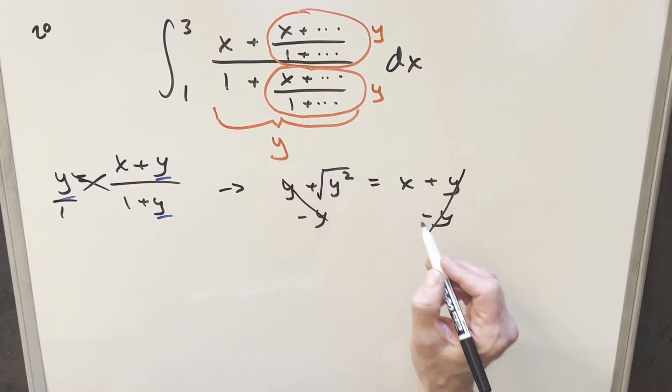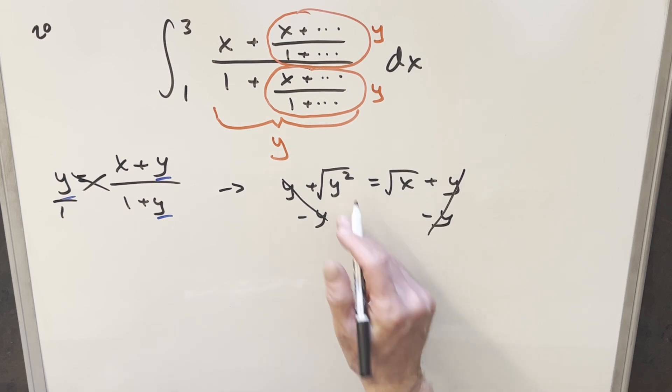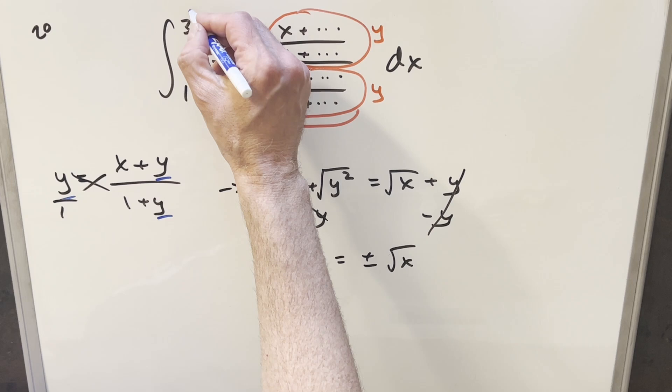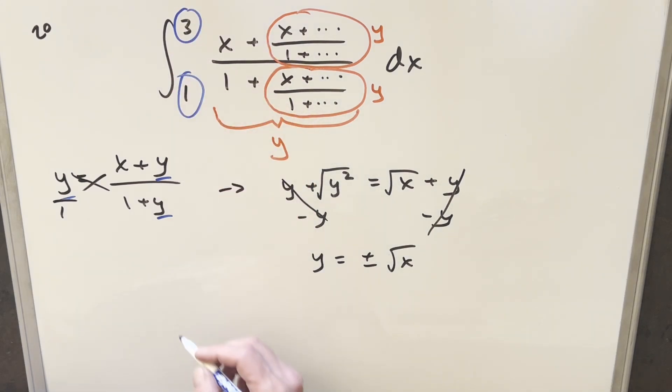And so we just have y squared equal to x. I'll take a square root on both sides here. So that's going to isolate my y. And so we have here y is equal to plus or minus square root of x. And then at this point, I don't really want plus or minus here. We'd like to get rid of that. Let's just notice our bounds. We're going from 1 to 3. That helps us with the radical.